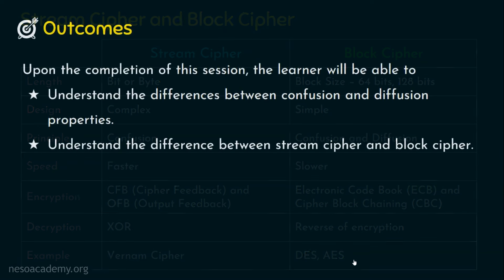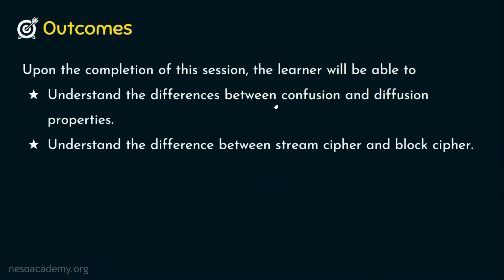And that's it. I hope now you understood the differences between the two important aspects of cryptographic algorithms — the diffusion property and the confusion property. We also understood what stream cipher and block cipher are. I hope the session was informative. Thank you for watching.